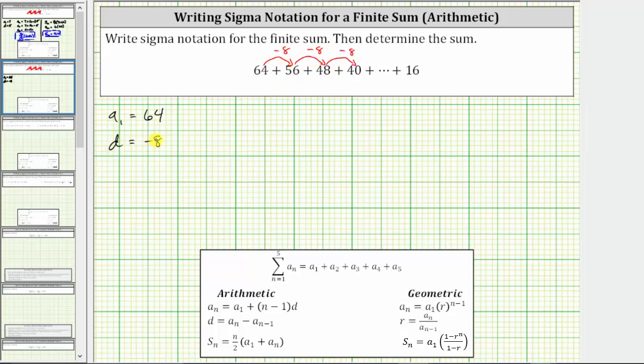Notice how there's also a formula to determine the common difference d, given by a sub n minus a sub n minus 1, which means to determine the common difference d, we can take any term in the series and subtract the term before it. Notice 40 minus 48 is negative 8, and so is 48 minus 56, as well as 56 minus 64.